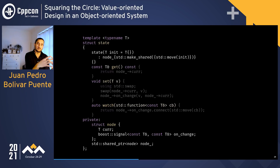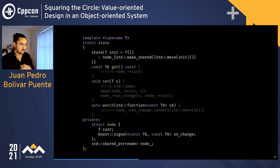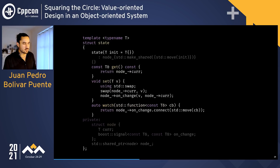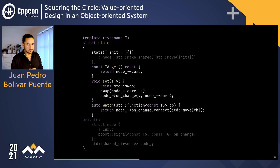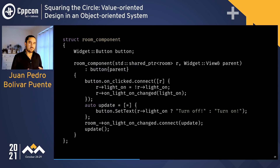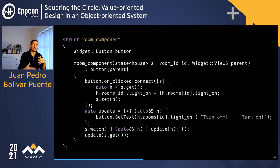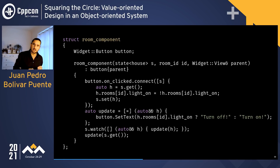To implement this, we use a shared pointer to a node — I use a shared pointer because this is our central state, so we'll manipulate it from different places. The node has the current value and a signal. We implement get, set, and watch by manipulating this node, which is basically a variable plus a signal. Once we have this, we can try to use it in our room component.